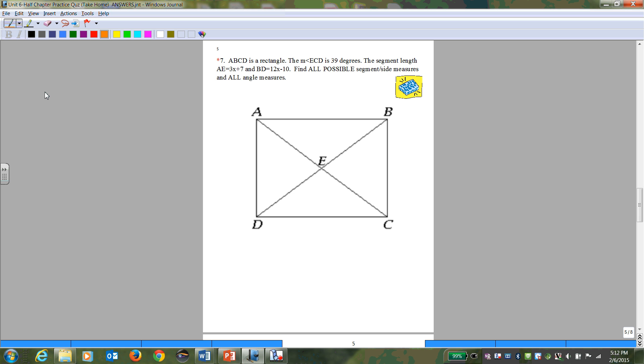It says ABC is a rectangle. The measure of angle ECD is 39 degrees. The segment length AE is 3X plus 7, and BD is 12X minus 10. Find all possible side lengths and segment measures. Step one, let's get this labeled properly. ECD is 39 degrees. So we go E to C to D, trace and sweep. That's 39 degrees. It's important you trace and sweep very carefully.